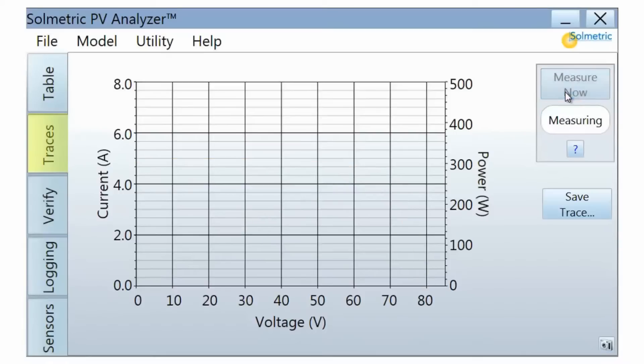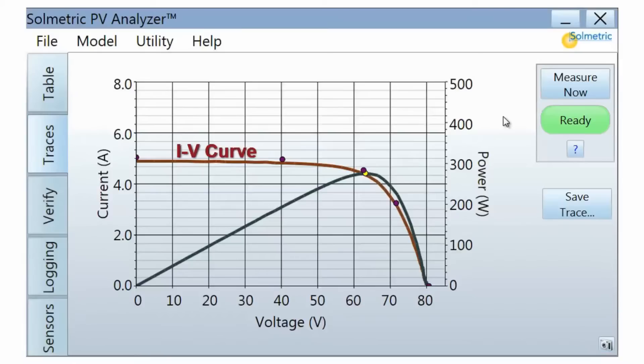The Traces tab shows a plot of the measured IV curve and PV curve. The current voltage curve, or IV curve, is drawn in red and uses the vertical axis on the left side of the plot. The shape of the IV curve predicted by the performance model is represented by five dots.